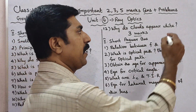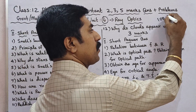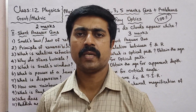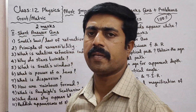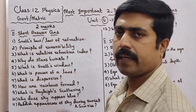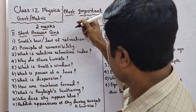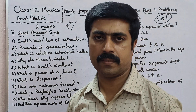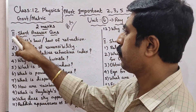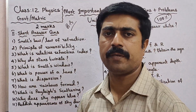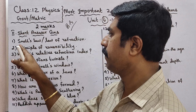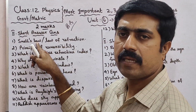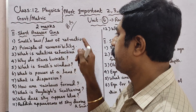If you prepare correctly, you can score 100% marks easily. For 2-mark short answer questions from the book, you can prepare the following: Question number 1 — State Snell's Laws of Refraction.